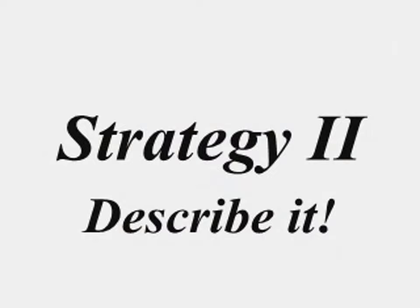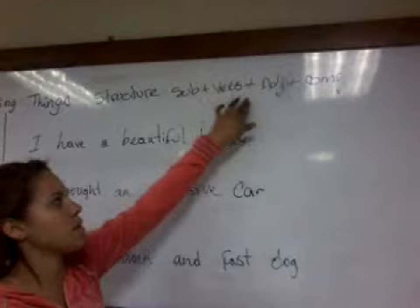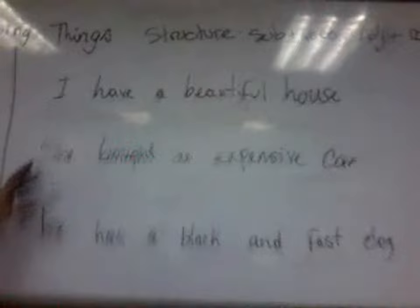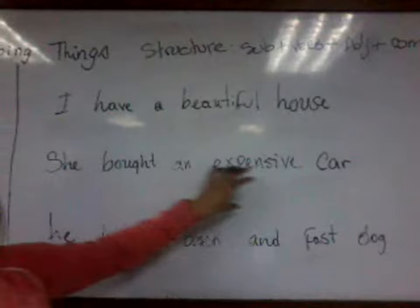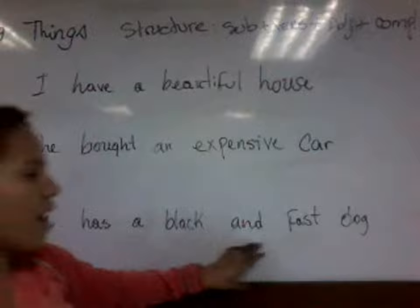We have the structure: subject plus verb plus adjective plus complement, as you can see in the center. For example: she has a beautiful hand. She found an expensive car. He has a black and fast dog.